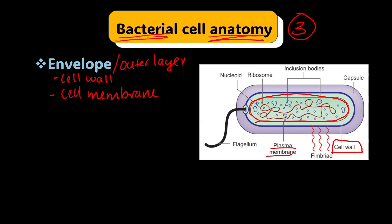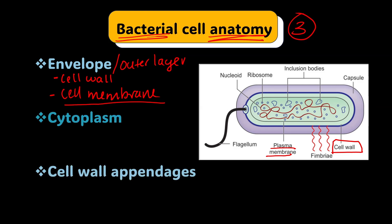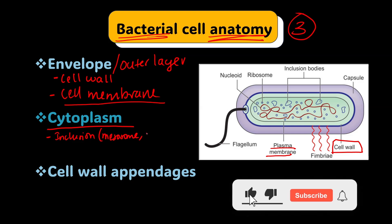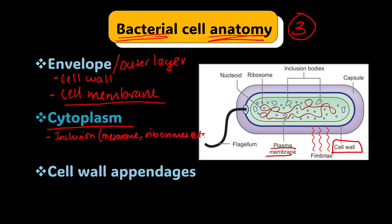The cell membrane encloses the cytoplasm. Inside the cytoplasm we have cytoplasm inclusions — organelles such as mesosomes and ribosomes — as well as inclusion granules and vacuoles. Along with these, the cytoplasm also contains the genetic material, which in bacteria is called the nucleoid: a single circular chromosome.